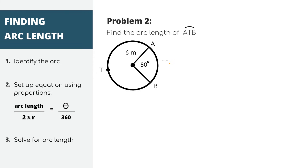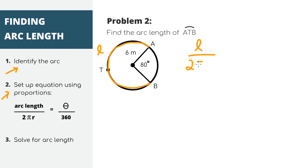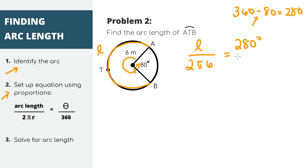For our second problem, we're using the same circle, but now it's asking us to find the arc length of ATB, which is this longer arc length here. We can use the same idea and use proportions to come up with an equation. We're trying to find arc length L, which is just a piece of the total circumference 2πr, and the lengths are proportional to the angle measures. The angle of the arc we're looking at is 280 degrees — I got that by taking 360 and subtracting 80. Solving for L, we'll get about 29.3 meters as our arc length.